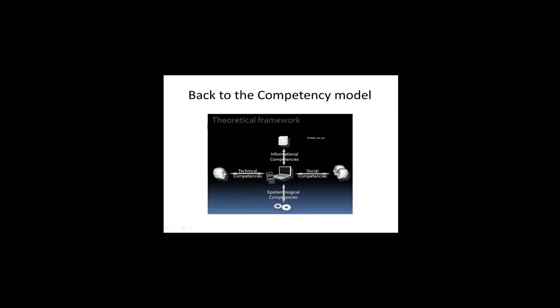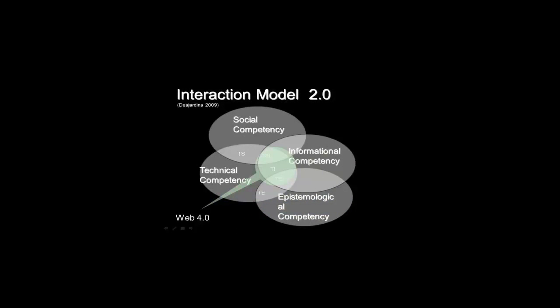The HCHI model, Desjardins 2001-2005, is being used in this course as it outlines the major technological competencies that will be explored throughout the course. According to the Desjardins Interaction Model (Desjardins 2009), Web 4.0 technologies lie at the intersection of the technical, informational, social, and epistemological orders. Consequently, competencies required for each of these orders should be required to work in a proficient manner with technologies that have affordances of this nature.